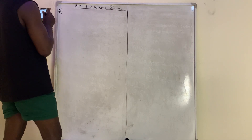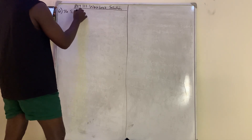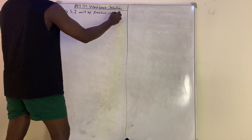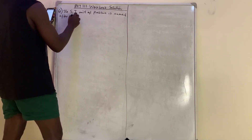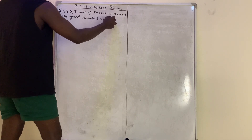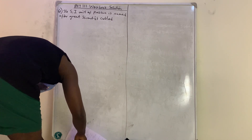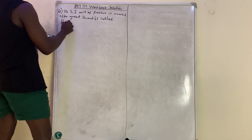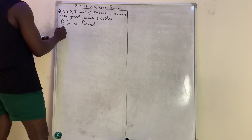Question number 61: The SI unit of pressure is named after a great scientist called Pascal. It was Pascal who discovered pressure, so it was named after himself — a man called Blaise Pascal.